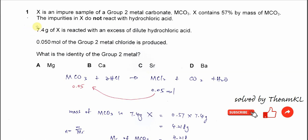Question 1. X is an impure sample of a Group 2 metal carbonate, MCO3. X contains 57% by mass of MCO3. The impurities in X do not react with hydrochloric acid.